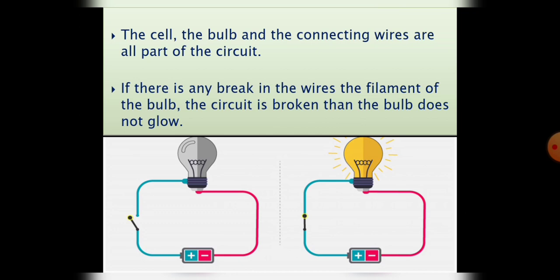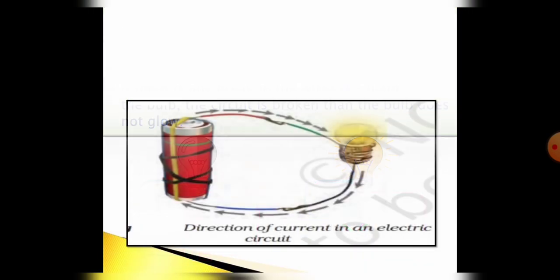Now if there is any break in the wire, the filament of the bulb, the circuit is broken, then the bulb will not glow. That means in this circuit the bulb will glow because it is not broken and it is a complete circuit, while the other one is having the broken circuit with the broken bulb. So in this case, condition 2 bulb will glow.